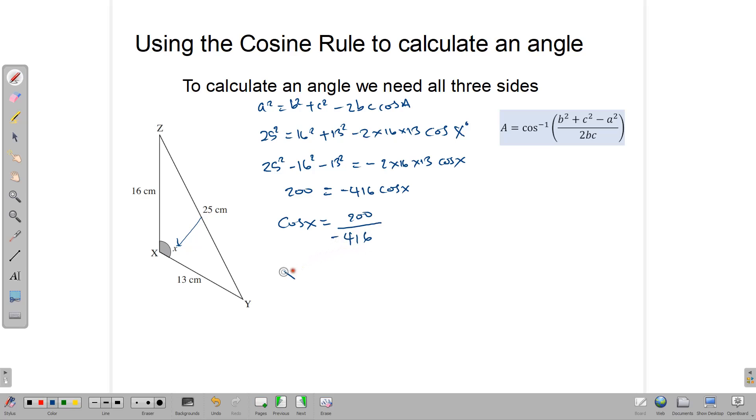We can find cos X by saying it is equal to 200 divided by negative 416. And of course, X itself, the angle, is equal to the cos inverse of 200 over negative 416. That gives us the cos inverse, if you want it in decimal, negative 0.481, which is equal to 118.6 degrees. That is the size of X.